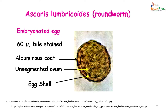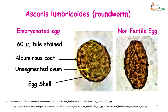A non-fertile egg appears elongated and you cannot differentiate the egg shell, the albuminous coat, and the unsegmented ovum. A non-fertile egg would be found in a person who has got infected with an egg which hatched into a female, but there is no male present to fertilize the female.